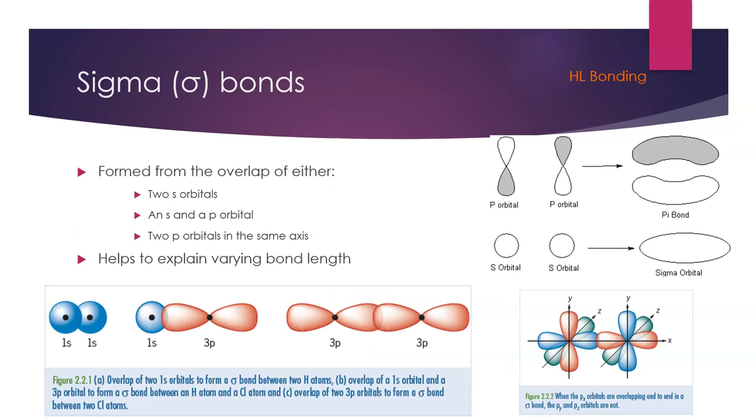With a sigma bond, what we're talking about is either the overlap of two s orbitals, as we see here, an s and a p in the second image, and two p orbitals, and these occur on the same axis. With a sigma bond, it's important to notice it is an end-to-end overlap of these two orbitals, be it ss, sp, or pp. We get this end-to-end overlap of the orbitals, which forms a sigma bond.